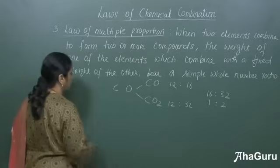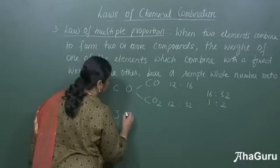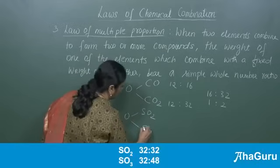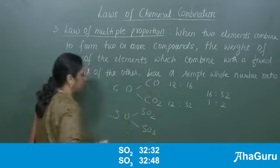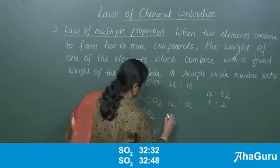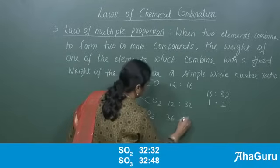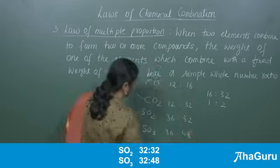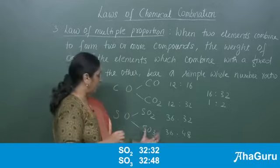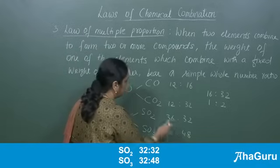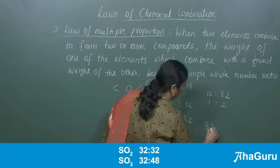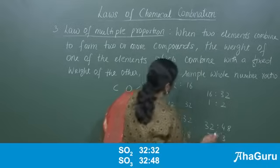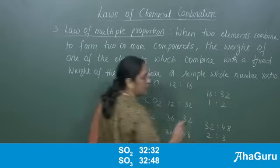Another example: sulfur and oxygen can form either sulfur dioxide or sulfur trioxide. In SO₂, the ratio of masses of sulfur to oxygen is 32 to 32, and in SO₃ it is 32 to 48. The sulfur is fixed and oxygen is varying. The ratio of the varying elements is 32 to 48, which is 2 to 3 — again a simple whole number ratio.